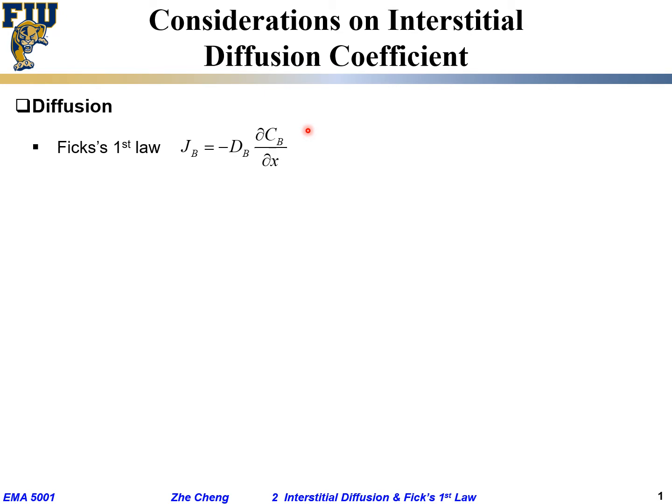On the other hand, if along my positive x direction the partial differential is positive, meaning it goes higher, then the diffusion flux is a negative number, meaning it goes backward.